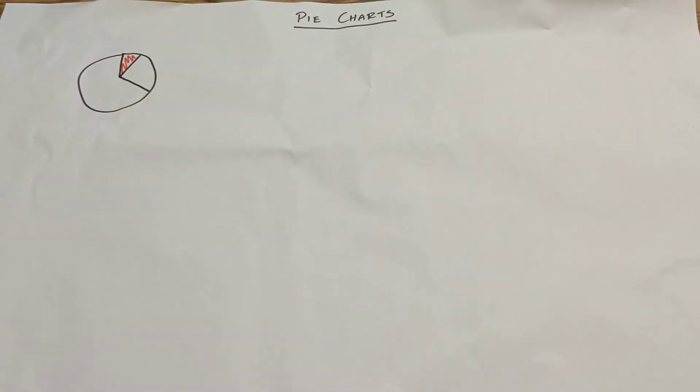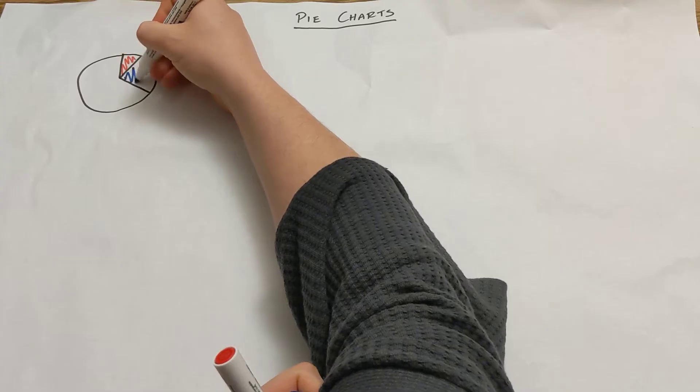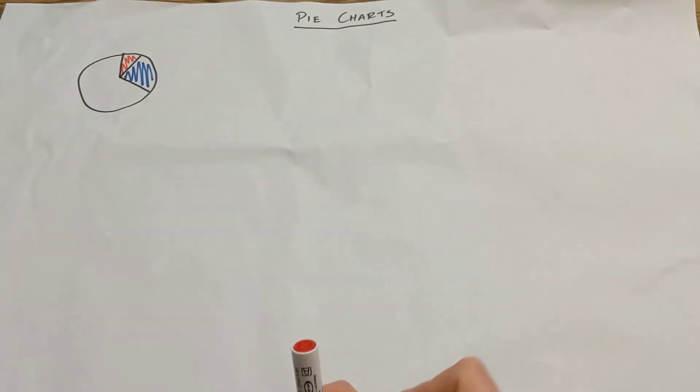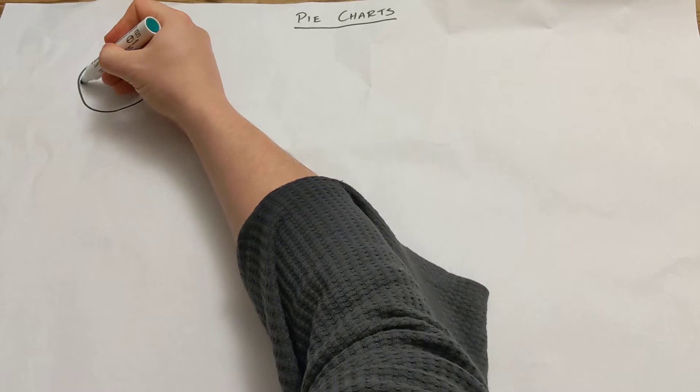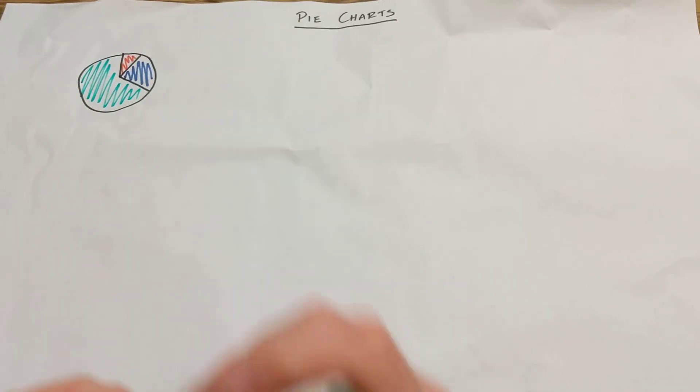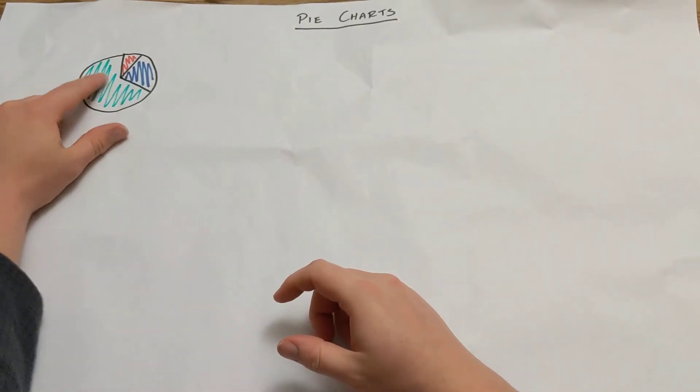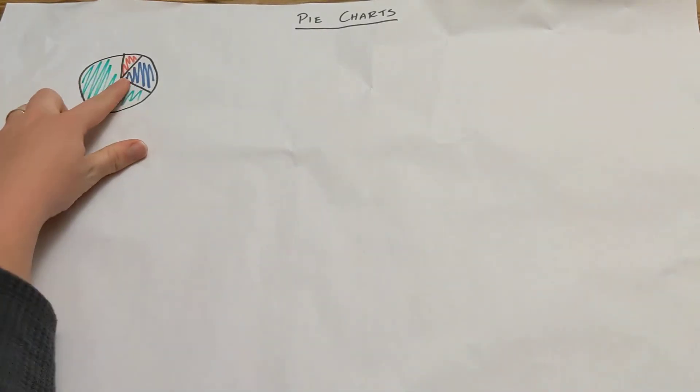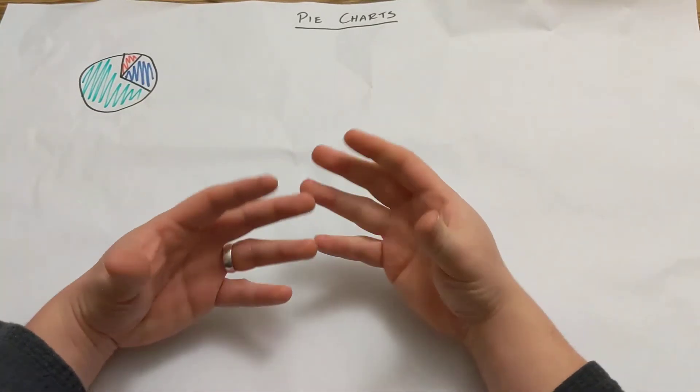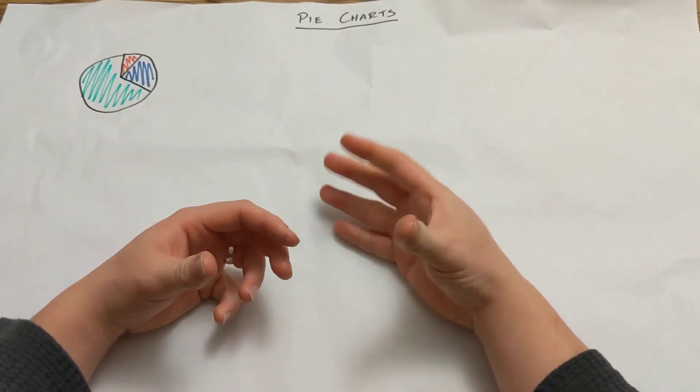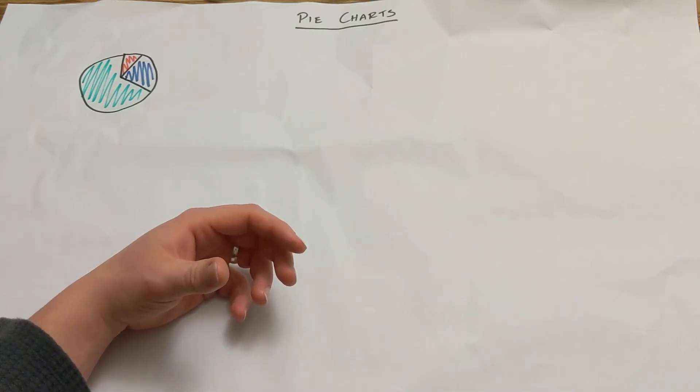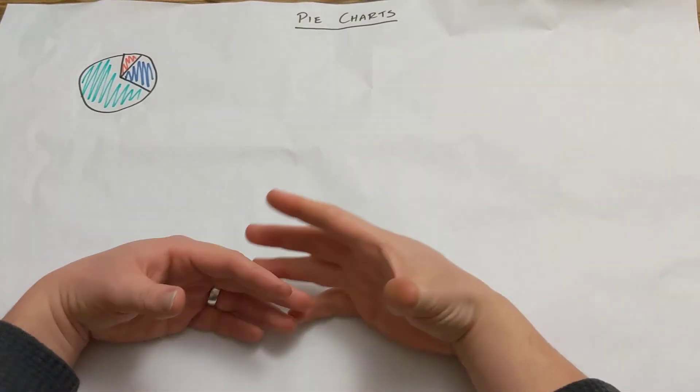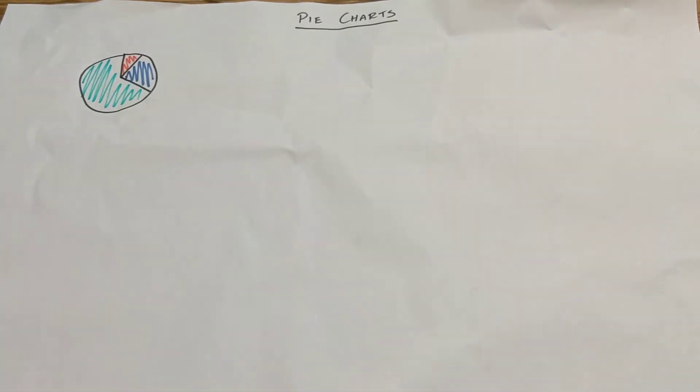We'd say if this pie chart represented a class and we'd asked what their favourite colour was, the small portion their favourite colour was red, the other portion blue, and the other green. We could look at that straight away and say most people in the class had their favourite colour as green, fewer had red, and a middle amount had blue. We can get actual, really good, specific data and information from this, but obviously we need a bit more detail on the pie chart and information about what the pie chart represents.